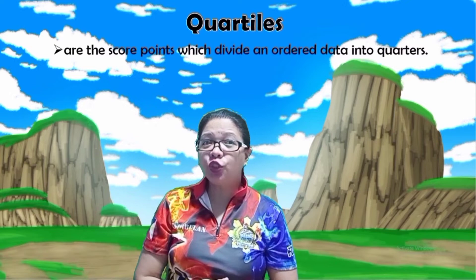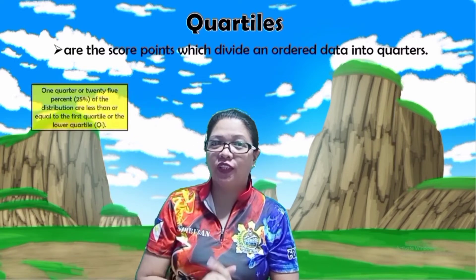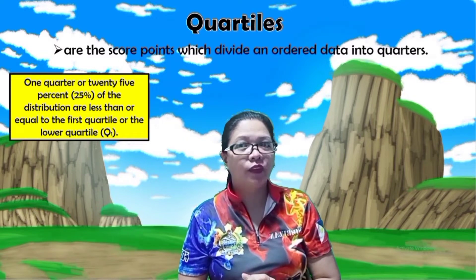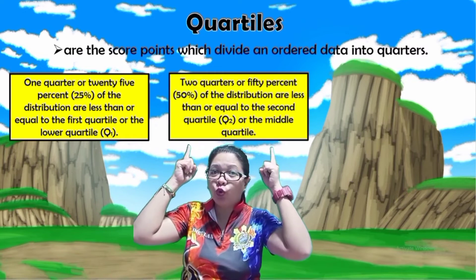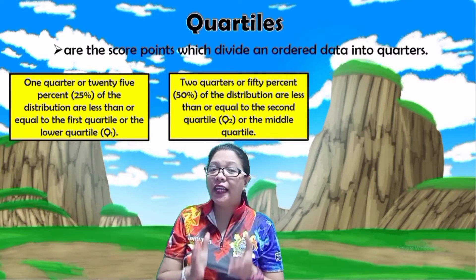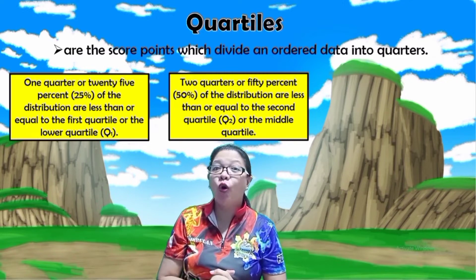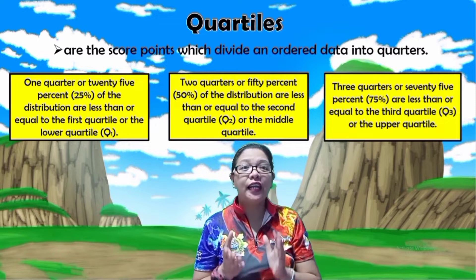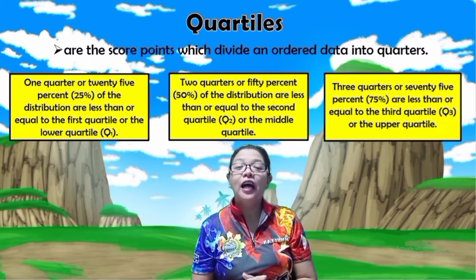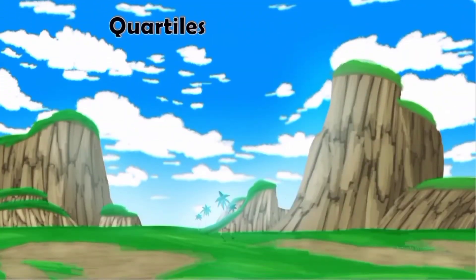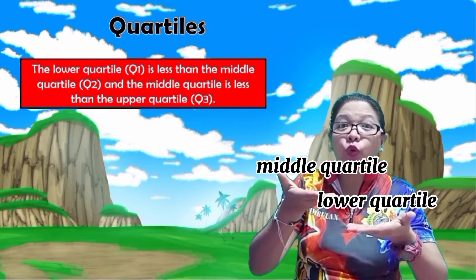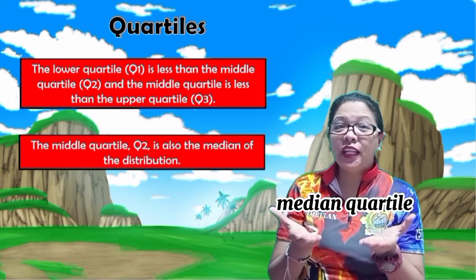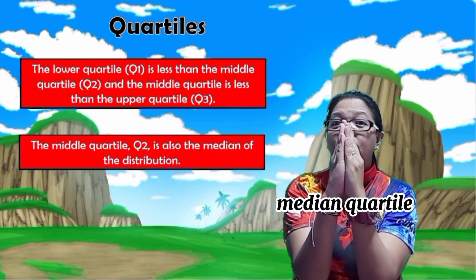Quartiles are the score points which divide an ordered dataset into quarters. One quarter, or 25%, of the distribution is less than or equal to the first quartile, or lower quartile. Two quarters, or 50%, are less than or equal to the second quartile, or middle quartile. Three quarters, or 75%, are less than or equal to the third quartile, or upper quartile. The middle quartile is also the median of the distribution.